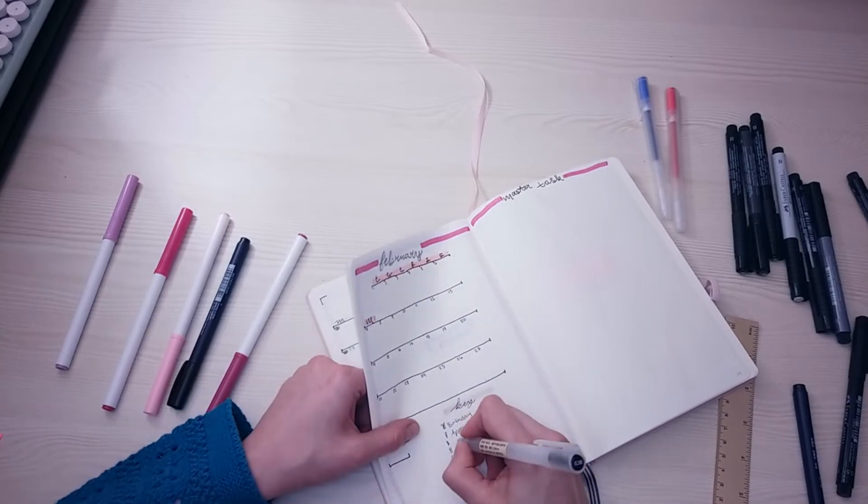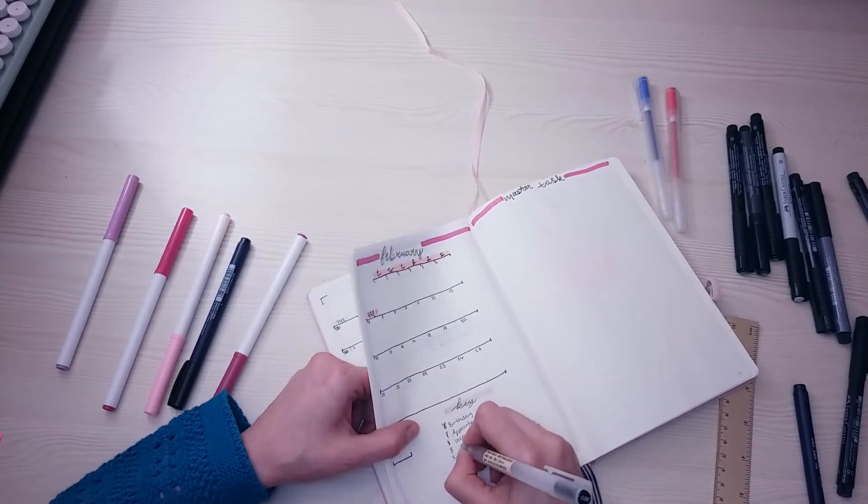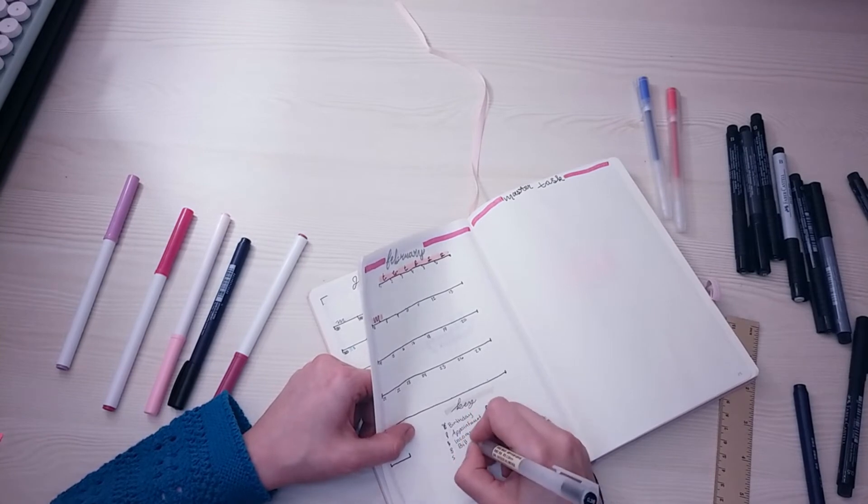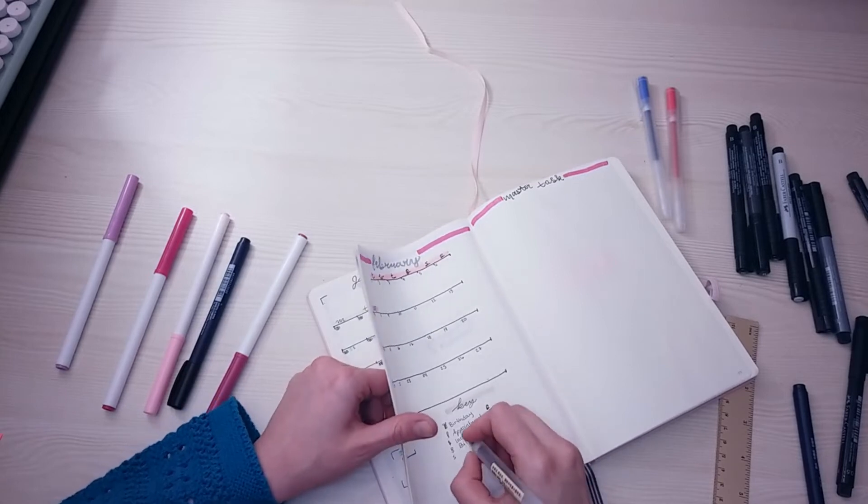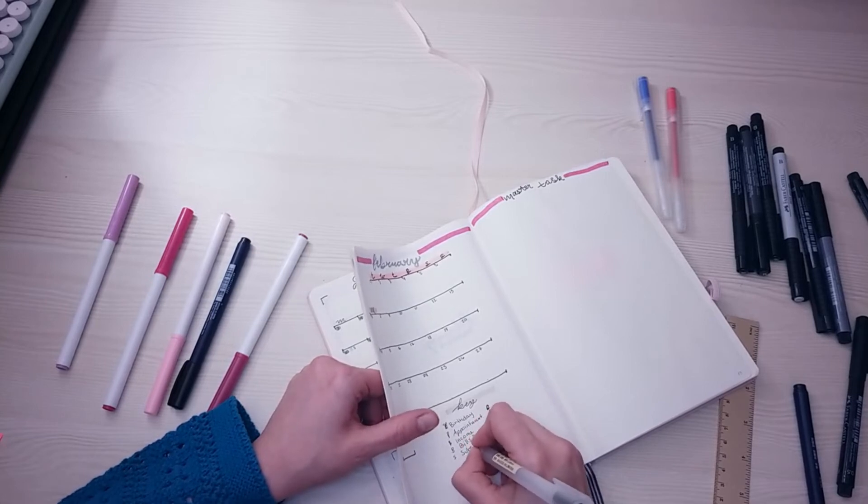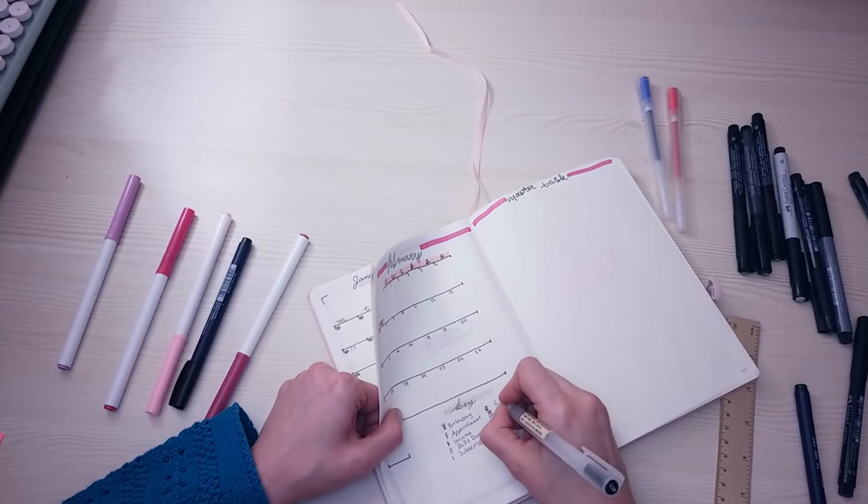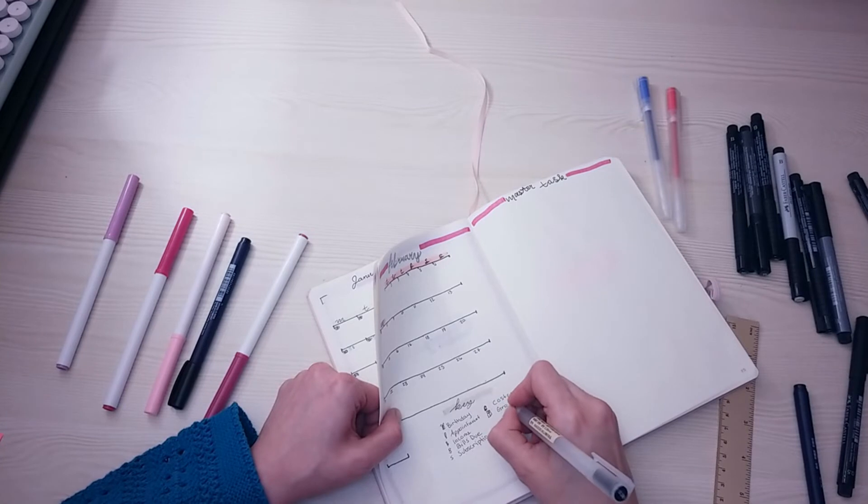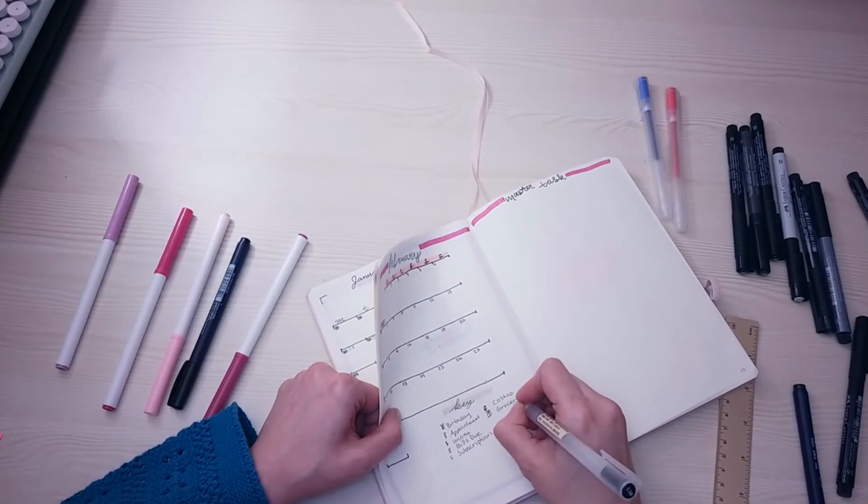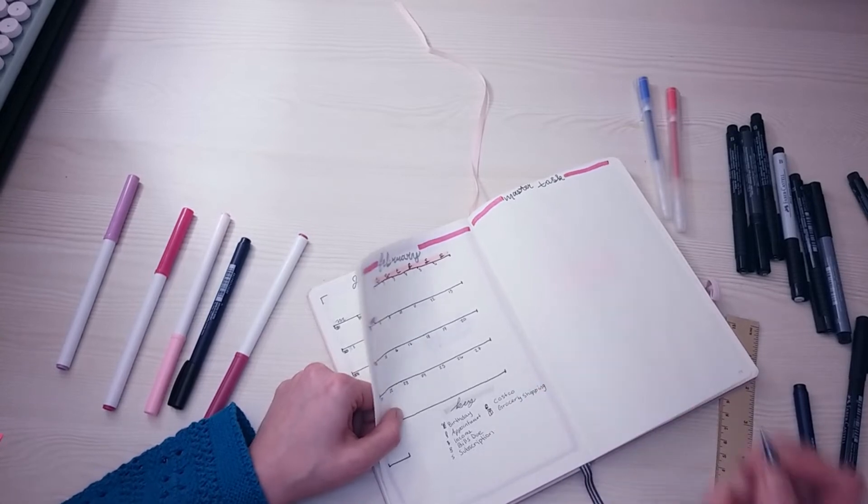People like to put their key at the beginning of the bullet journal, but I don't know, I just don't find that helpful if you know what I mean. Having it there, I'd rather have it on each month and that way I can see it immediately. Grocery shopping.